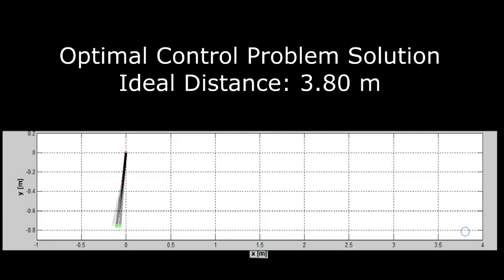In our work, we firstly solve an optimal control problem which creates reference motor trajectories. The simulation shows the motion of the robot when the optimal control problem trajectories are applied to the nominal robot model in an open-loop manner. The ideal distance in this case is 3.80 meters.